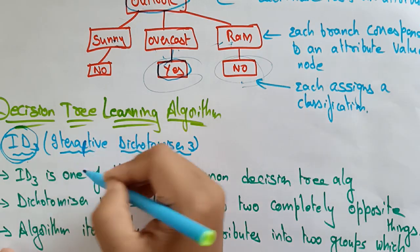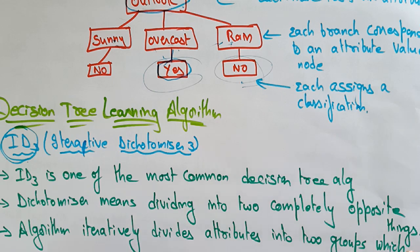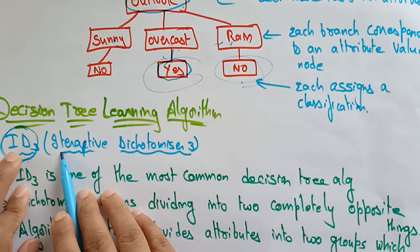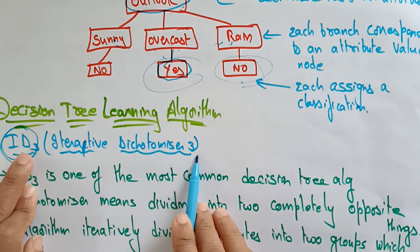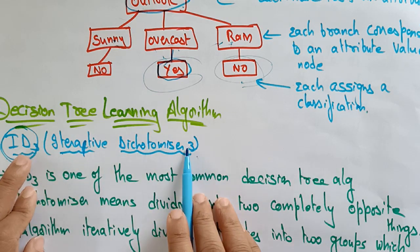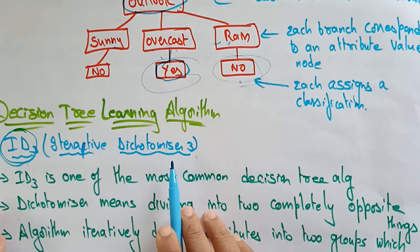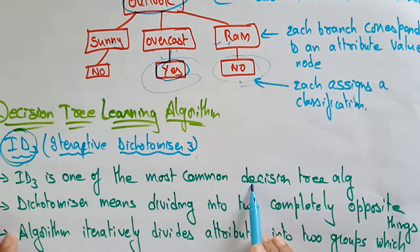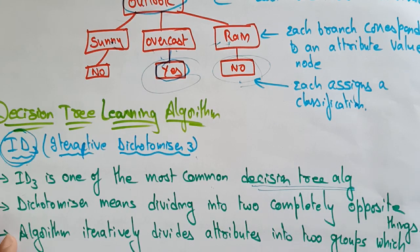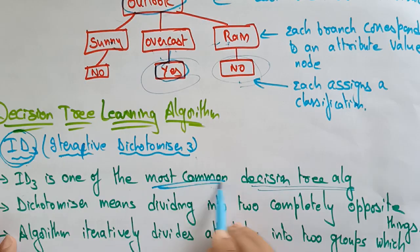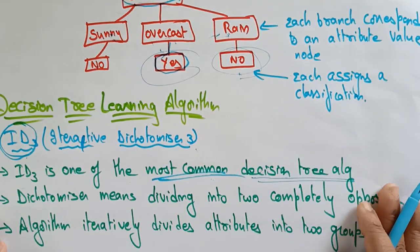ID3 stands for Iterative Dichotomizer 3. I stands for Iterative, D stands for Dichotomizer, and 3 is the version number. ID3 is one of the most commonly used decision tree algorithms.